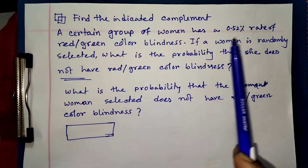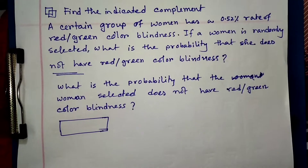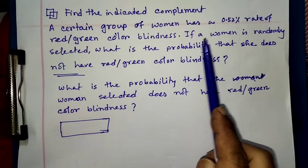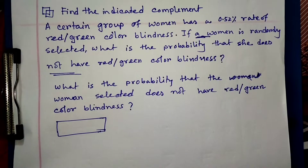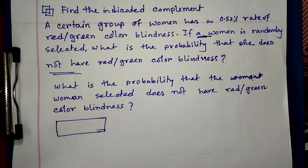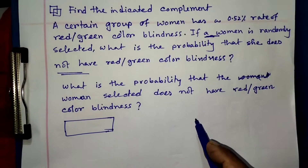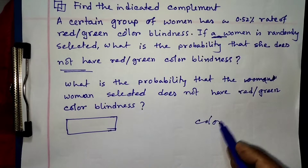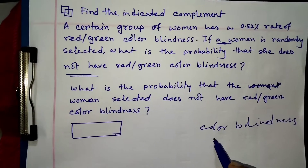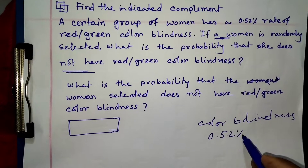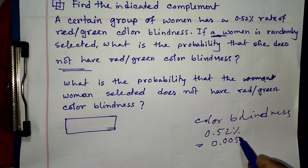A certain group of women has a rate of red or green color blindness. If a woman is randomly selected, what is the probability she does not have red or green color blindness? We have a rate of color blindness of 0.52%, that means 0.0052.